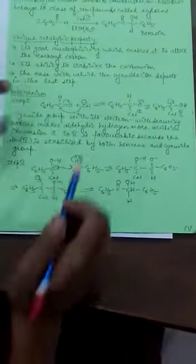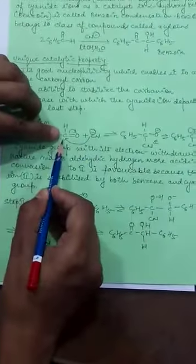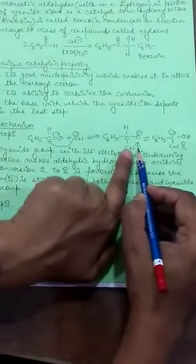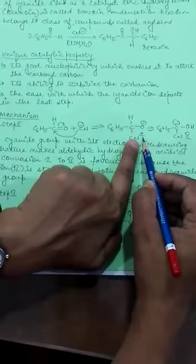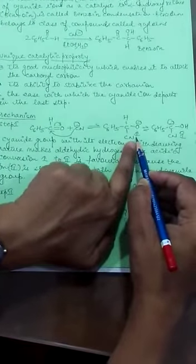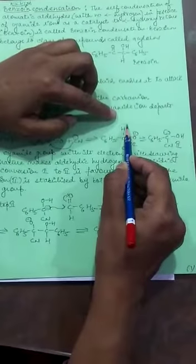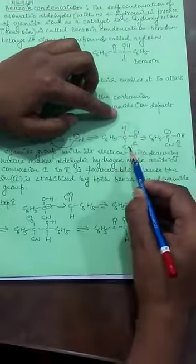Now, we will look at the mechanism. In the first step, the cyanide ion attacks the electrophilic carbon of the carbonyl group and intermediate one is formed. Now, the H+ ion will move to this position and this will be converted into the carbon ion.